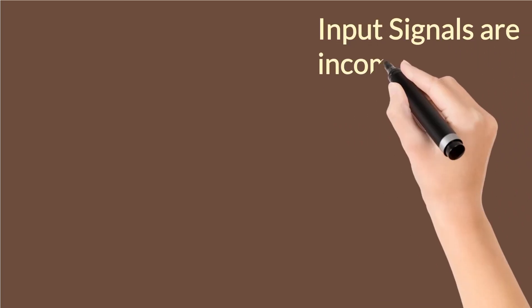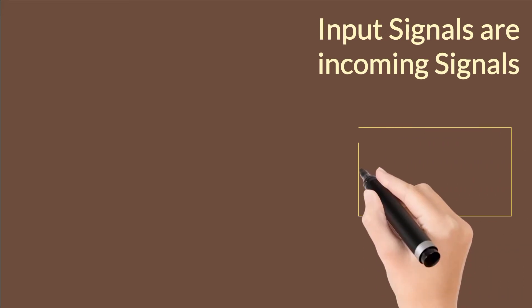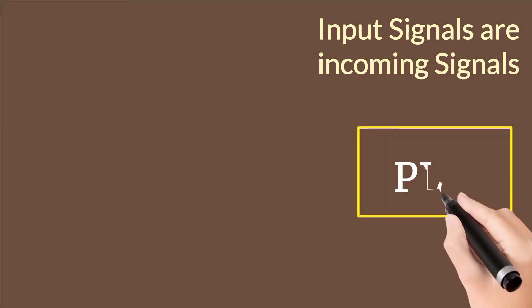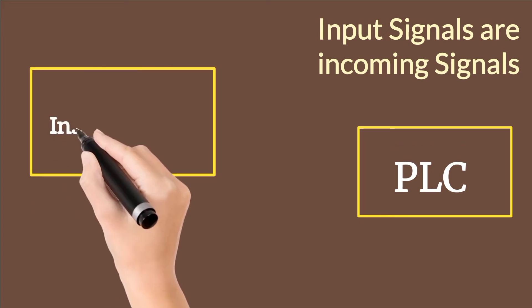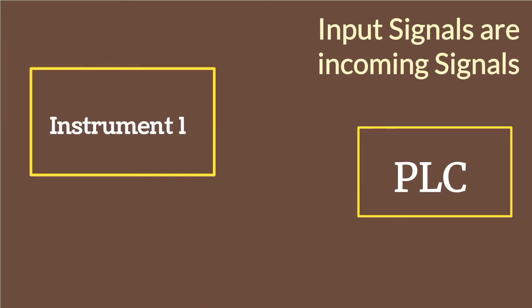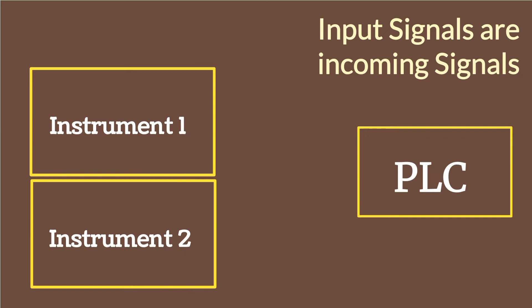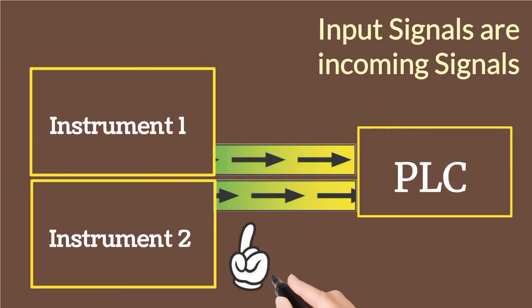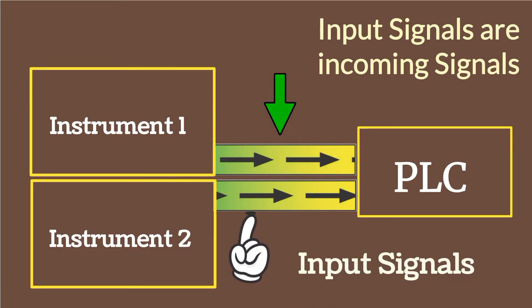Input signals are incoming signals. We have drawn a box representing the PLC, and boxes for various instruments — Instrument 1, Instrument 2, up to Instrument N. The incoming signals to the PLC from these instruments are called input signals, as shown by the arrows in the diagram.